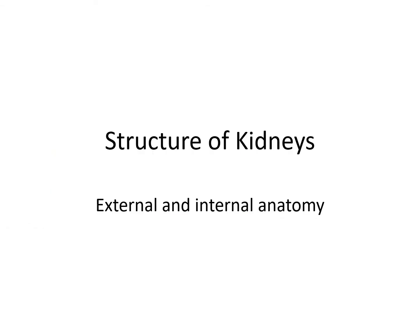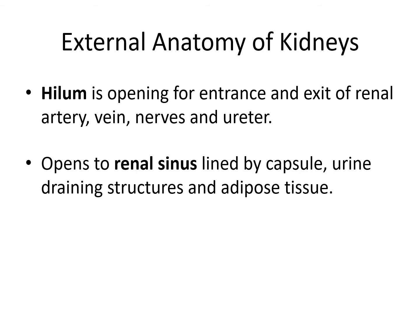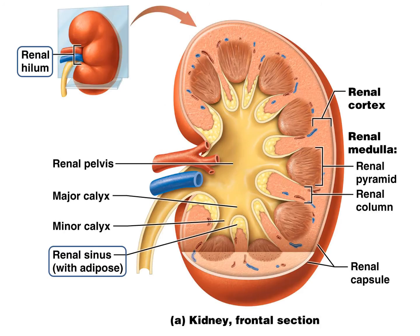We'll talk a little bit about the structural kidneys — not too much of the external and internal anatomy, as you're going to get most of that in lab. The hilum is the opening for the entrance and exit of the renal artery, vein, nerves, and the ureter. This opens into a space called the renal sinus, which is lined by the capsule and urine-draining structures as well as adipose tissue. Here you can see the blood vessels and the ureter leave, and the renal sinus lined with adipose.